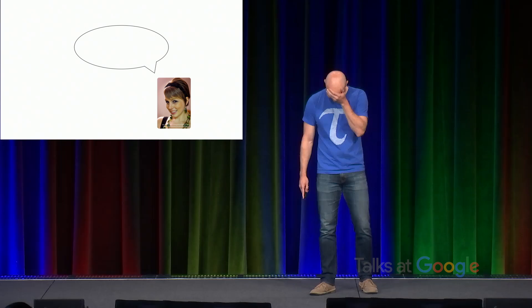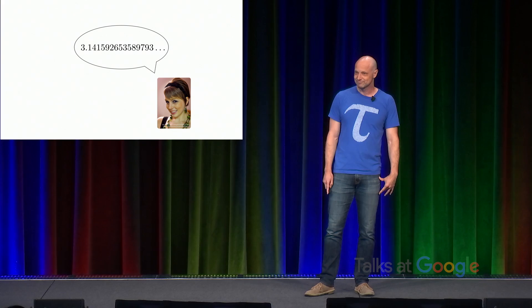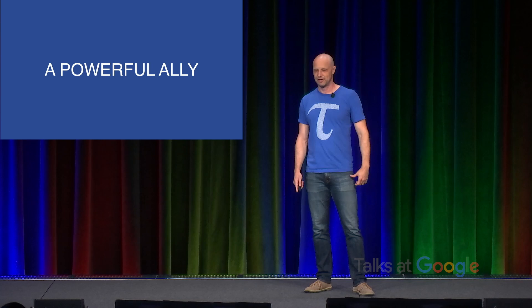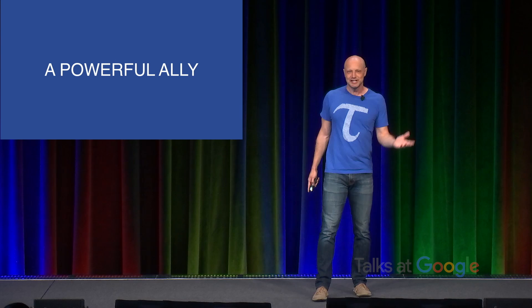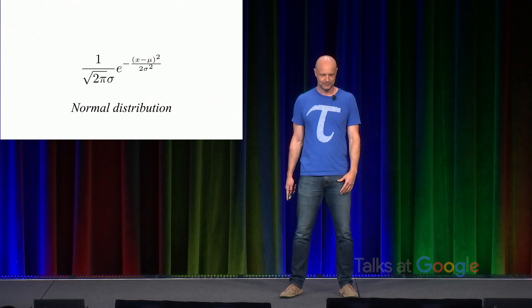So even though we're up against a powerful enemy, we do have a powerful ally. Because the truth is on our side. So let's take a look at some common expressions in mathematics and see if we can see any patterns. So this is the normal distribution. This is the density for a bell curve. As you can see, there's a 2 pi there. The details here aren't important. Just look at the patterns.